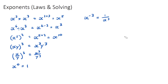The last rule I want to go through is if you have a fractional power — for example, x to the power of 5/3. The numerator stays on top of the x, so it's x to the power of 5. The denominator is the root, so this is the cubed root of x to the power of 5. If the denominator is 2, it's the square root, and we don't need to write the little 2.